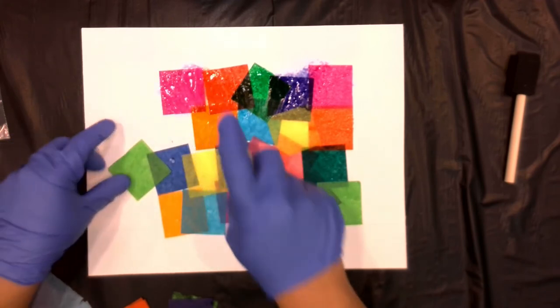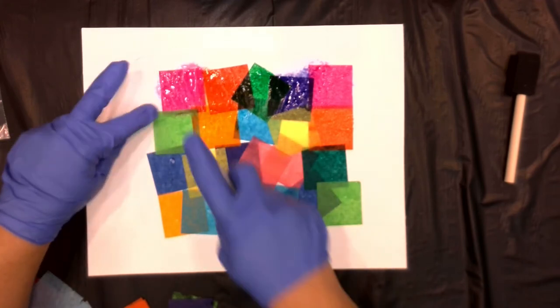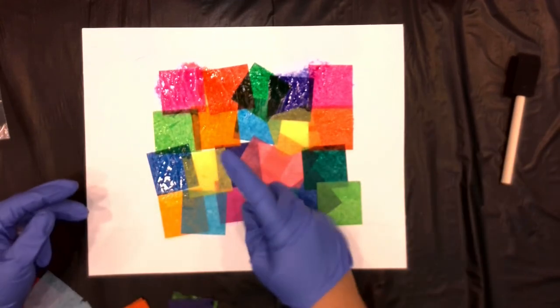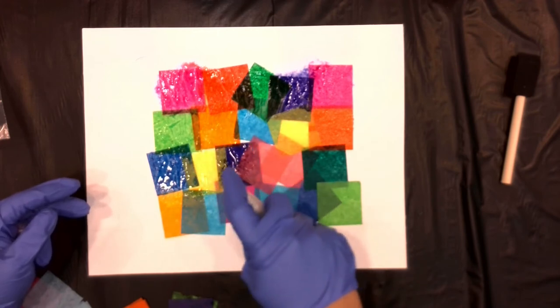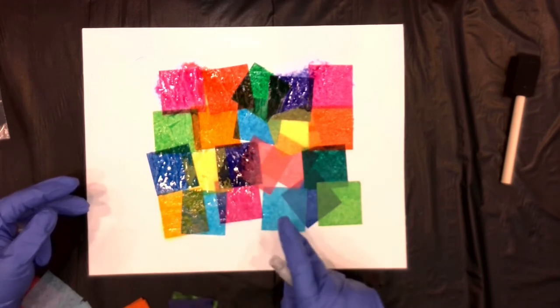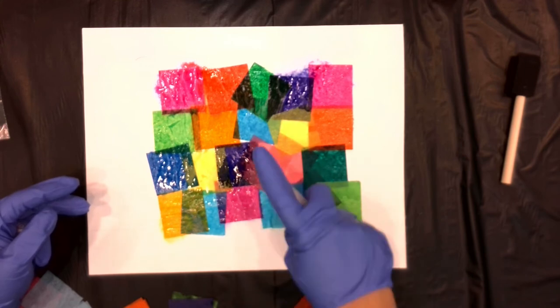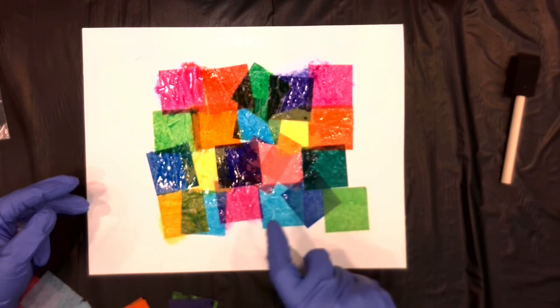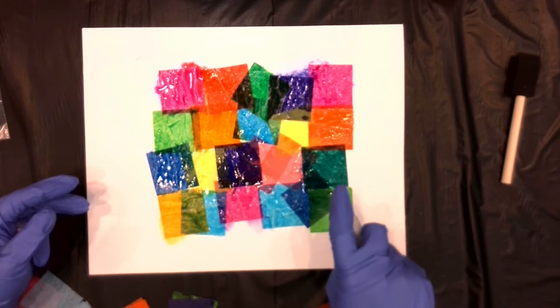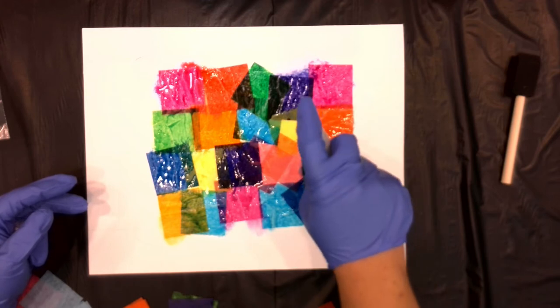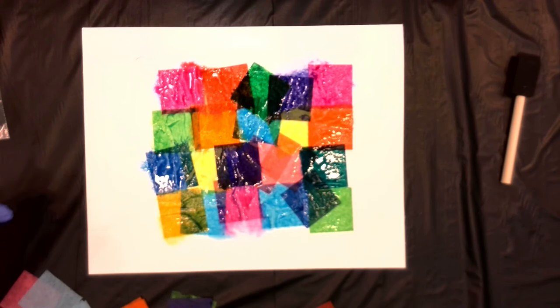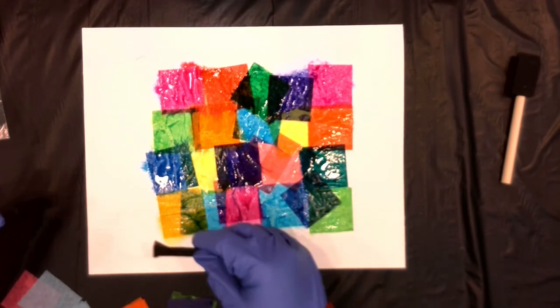And you can already see up here we've got some of that dye really starting to move. You can spray each square of tissue paper as you lay it down. I did say I was going to use my little foam brush. We'll use that in a minute. Or as I've done here, I've kind of blocked out my colors where I want everything and then I am spraying all of my tissue paper at once. So make sure you really get a solid soaking in there.